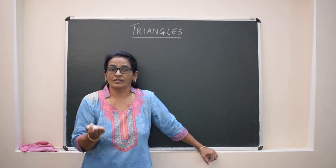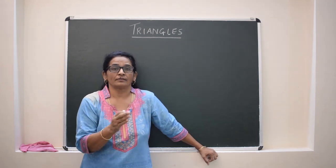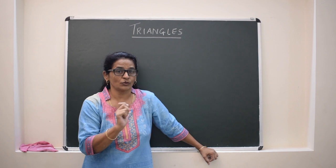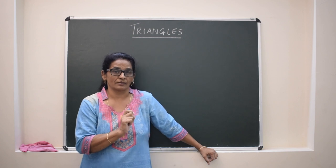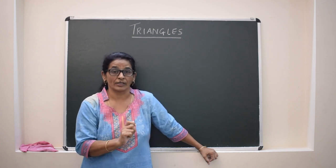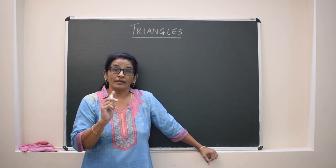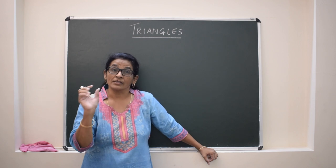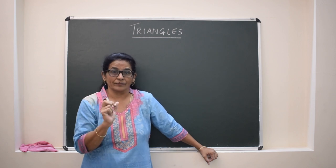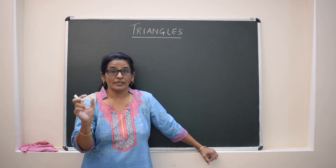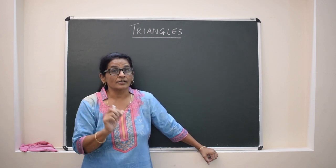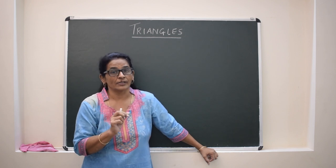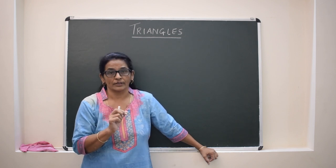When we discuss similarity, congruency comes before it. When any two objects, any two geometrical shapes, when we compare and we see the shape and the size, then if the shape and size both are same, then we can say the figures are congruent.